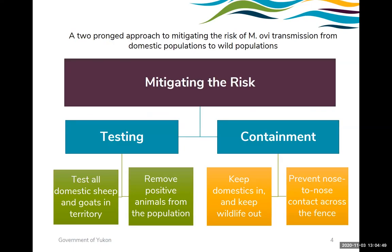We refer to our approach as a two-pronged approach to mitigating the risk of MOV transmission from domestic populations into wild populations. Those two prongs are testing and containment. Under testing, we're testing all domestic sheep and goats in the territory and removing positive animals from the population. On the containment side, our objectives are to keep domestics in, keep wildlife out as best we can, and prevent nose-to-nose contact across the fence.